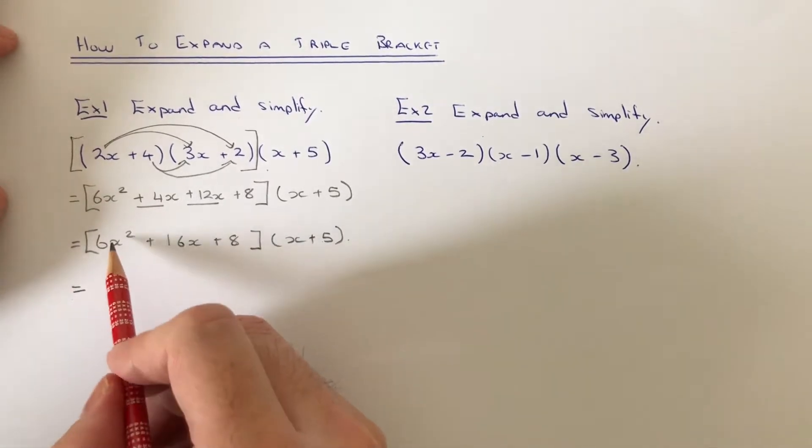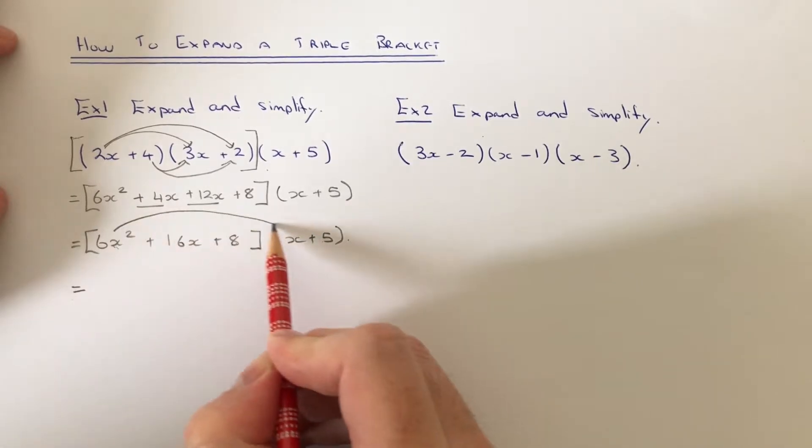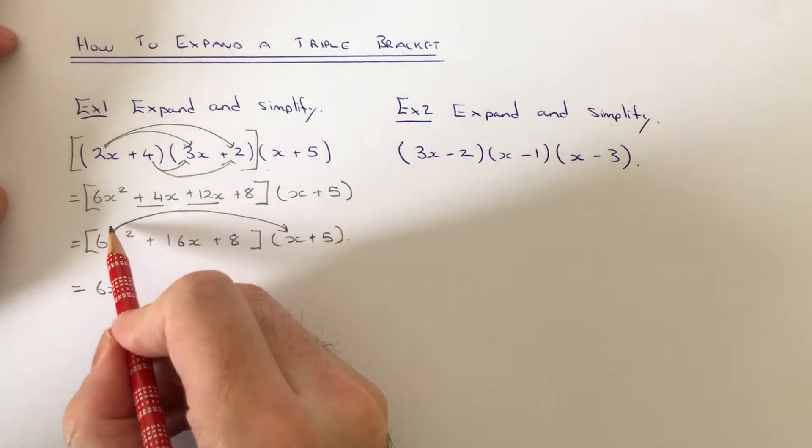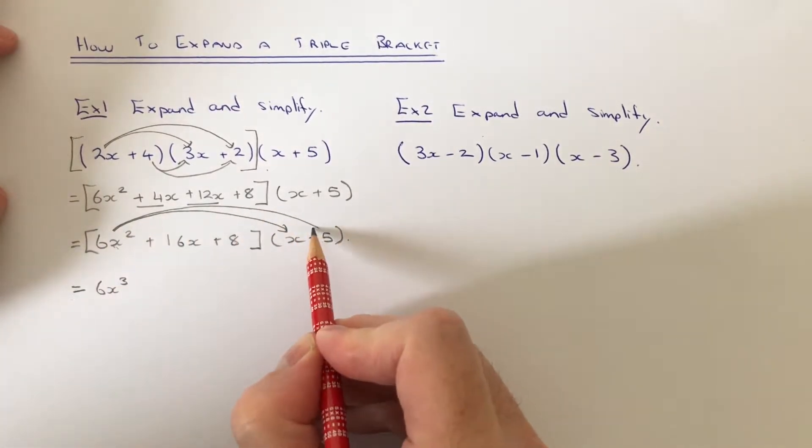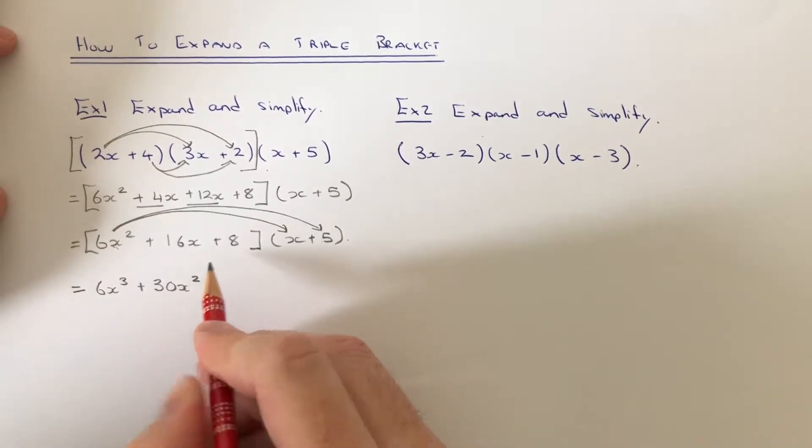If we start off with the 6x squared first of all, we multiply that by the x to give us 6x cubed. Then do 6x squared times the 5, that will give us 30x squared.